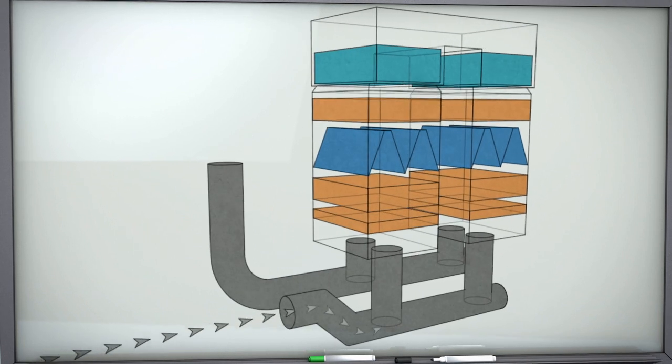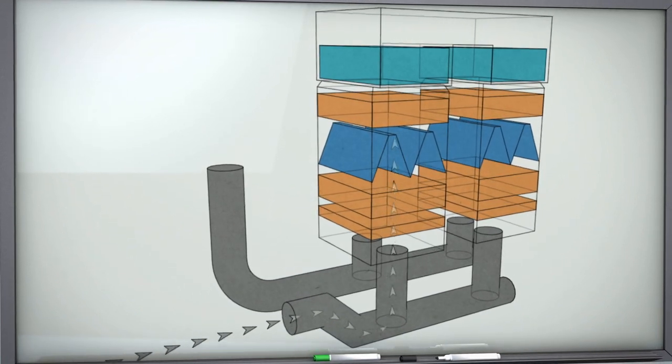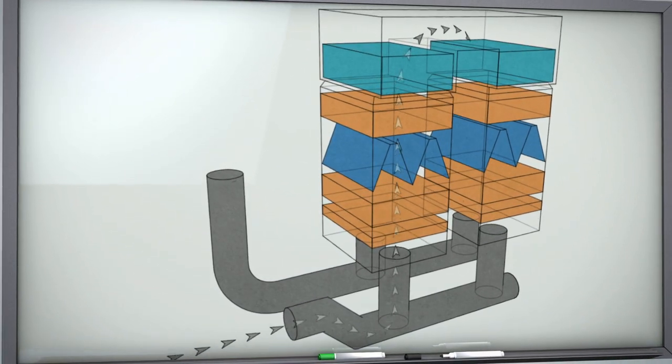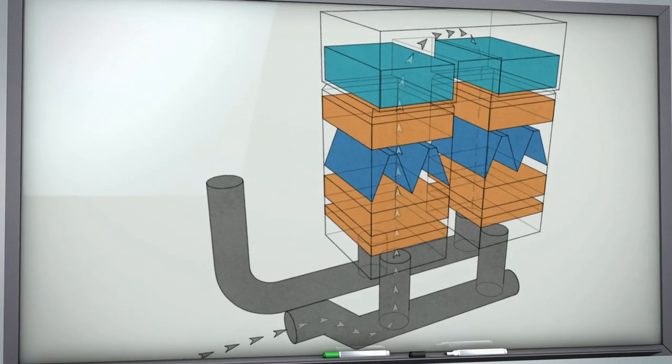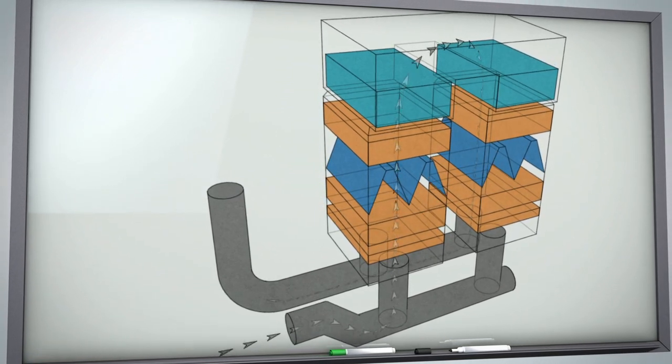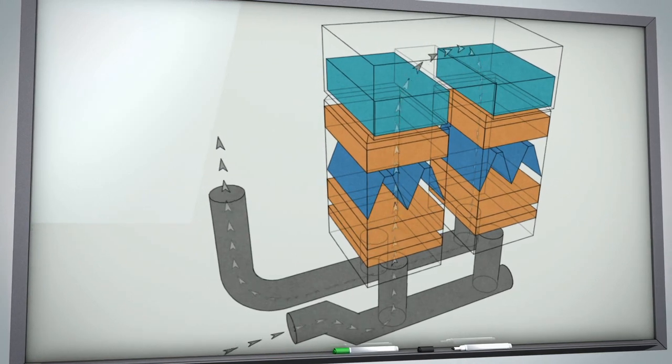The process begins by drawing the exhaust stream into the regenerative catalytic oxidizer. As the stream enters the RCO, it will pass through the first of a series of heat exchangers that house ceramic heating material.